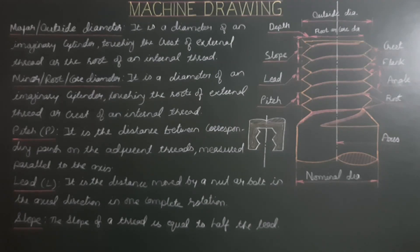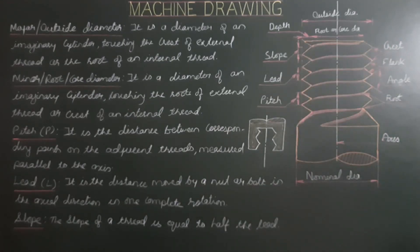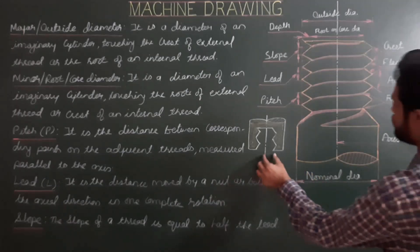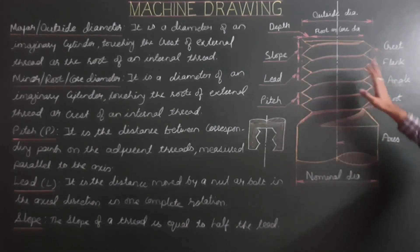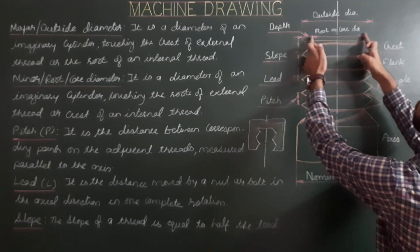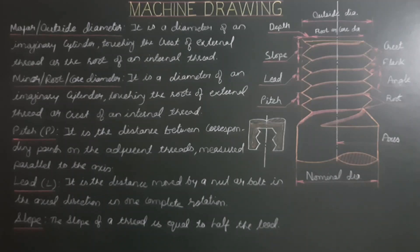Major diameter or outside diameter is the diameter of an imaginary cylinder touching the crest of external thread or the root of an internal thread. Minor, root, or core diameter is the diameter of an imaginary cylinder touching the roots of external thread or the crest of an internal thread. From crest to crest is major or outside diameter; from root to root is root, core, or minor diameter.